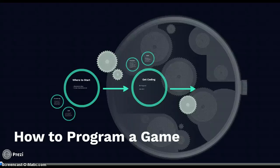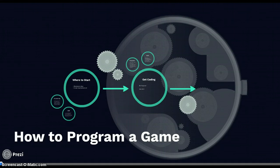So you want to know how to program a game. Let's look at the process involved with doing that. There are several things you want to keep in mind to make sure that you make a successful product. One of the best ways to do this is to have some clear thoughts in mind on how to get where you want to go.